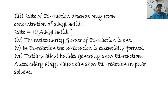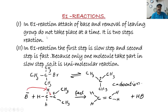The rate equation is: Rate = k[alkyl halide]. The molecularity and order of reaction is one, because in the slow step only the tertiary alkyl halide is involved — only one molecule participates. The slow step is called the rate-determining step, and the number of molecules participating in the rate-determining step gives the order of reaction.